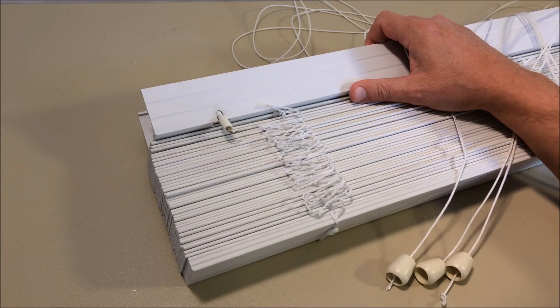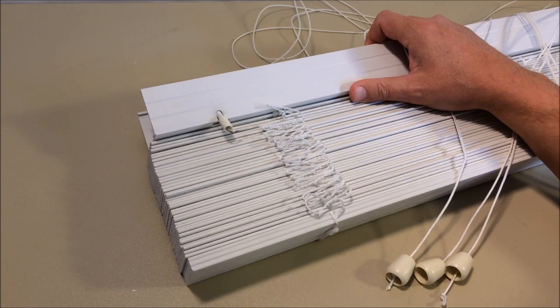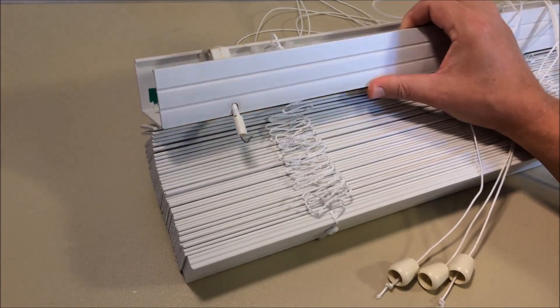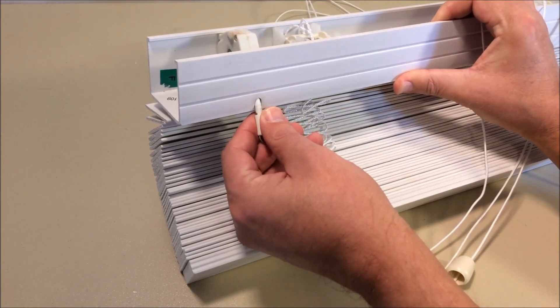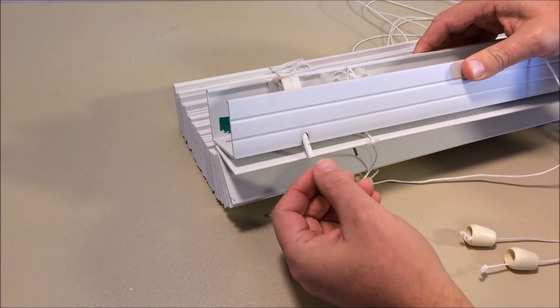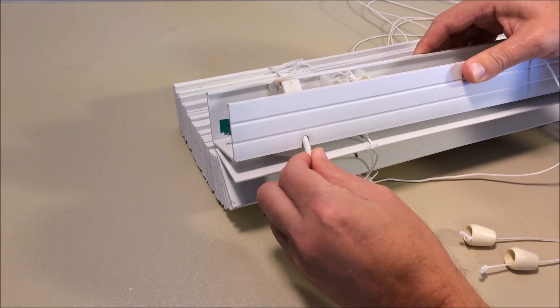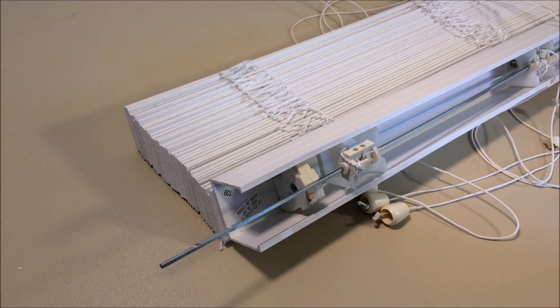You're looking at the blind. We removed it from the window. We just followed the simple instructions. It took about 30 seconds. Next thing we're going to do is remove the tilt rod and this mechanism here. We pretty easily removed this tilt rod holding pin right here.